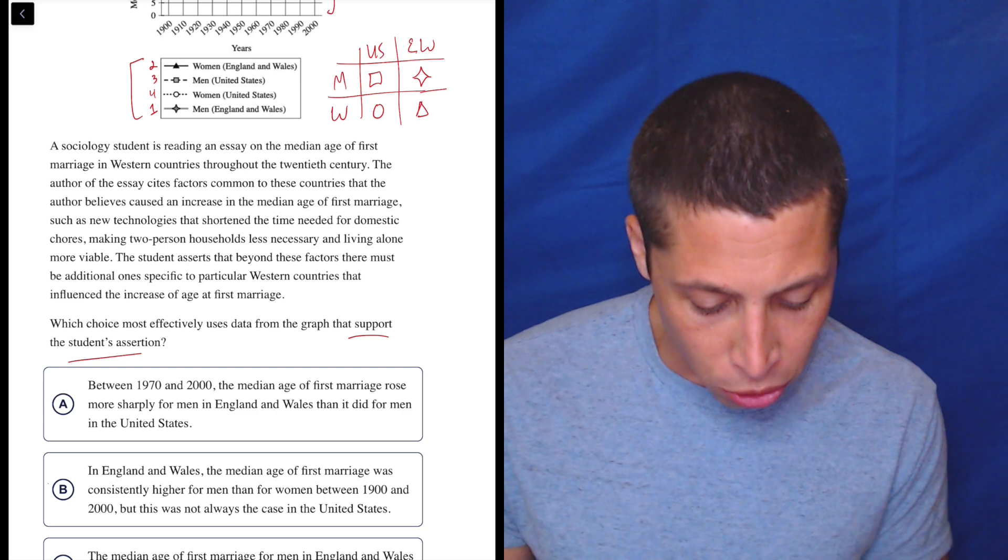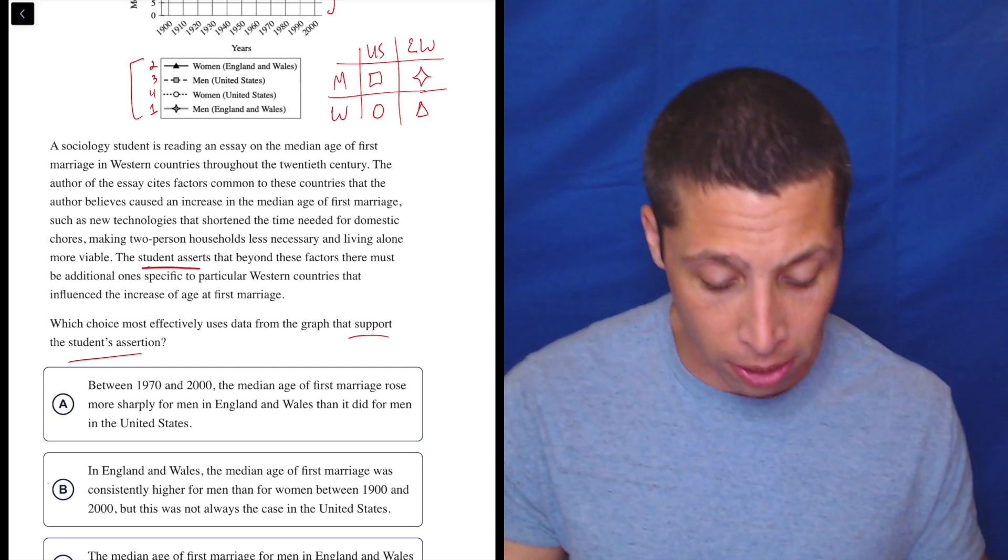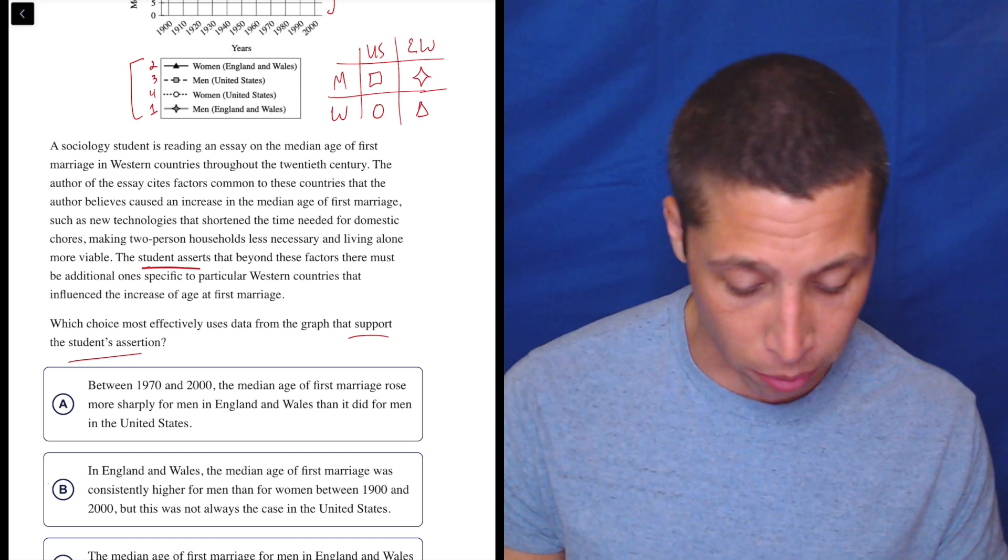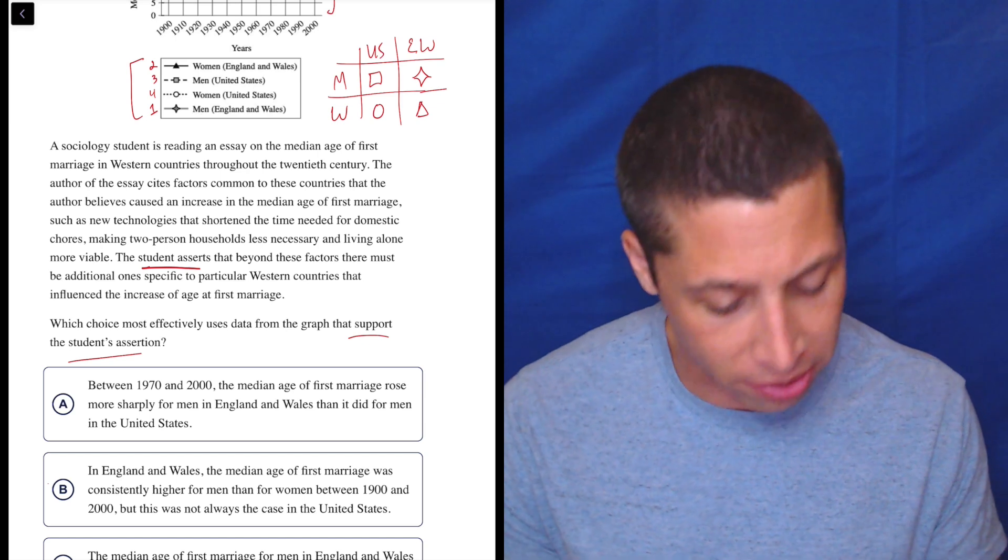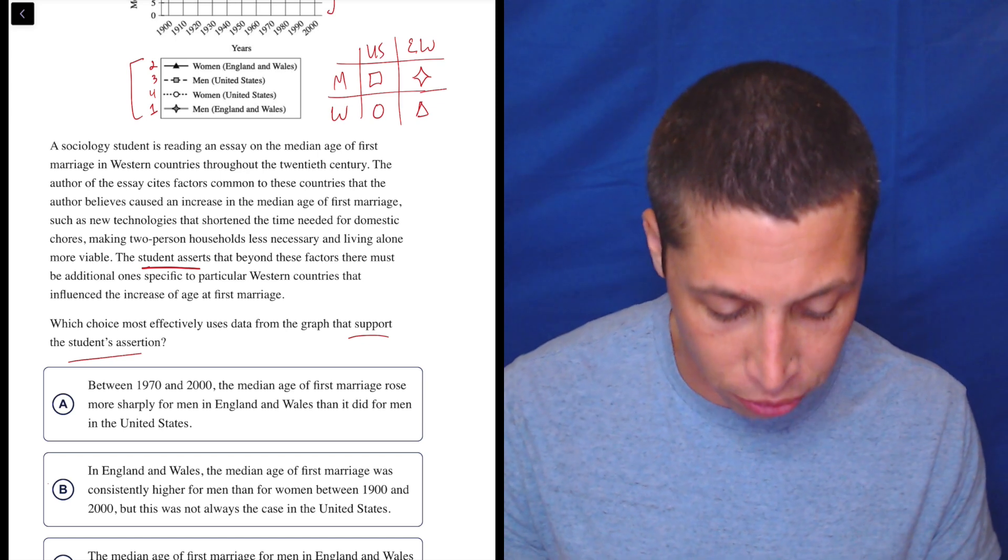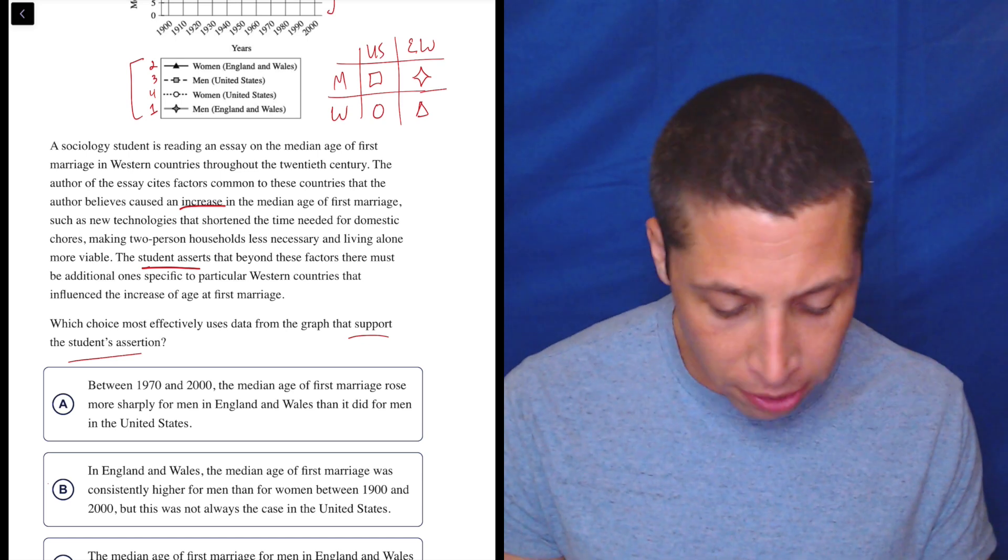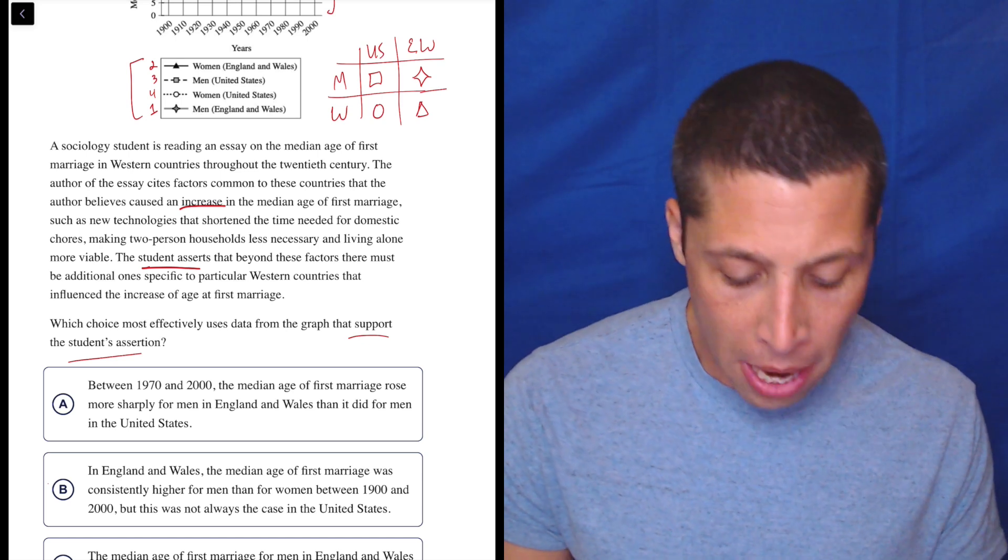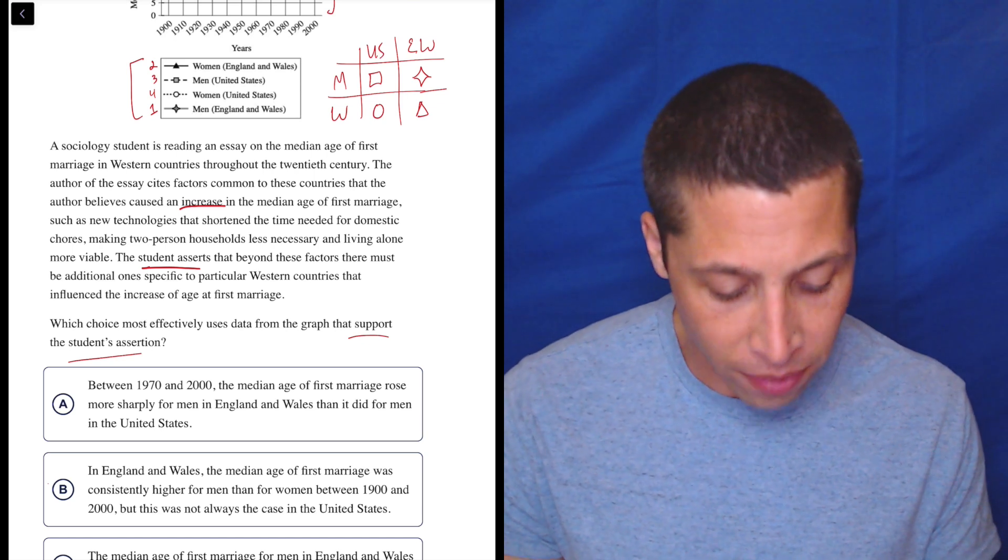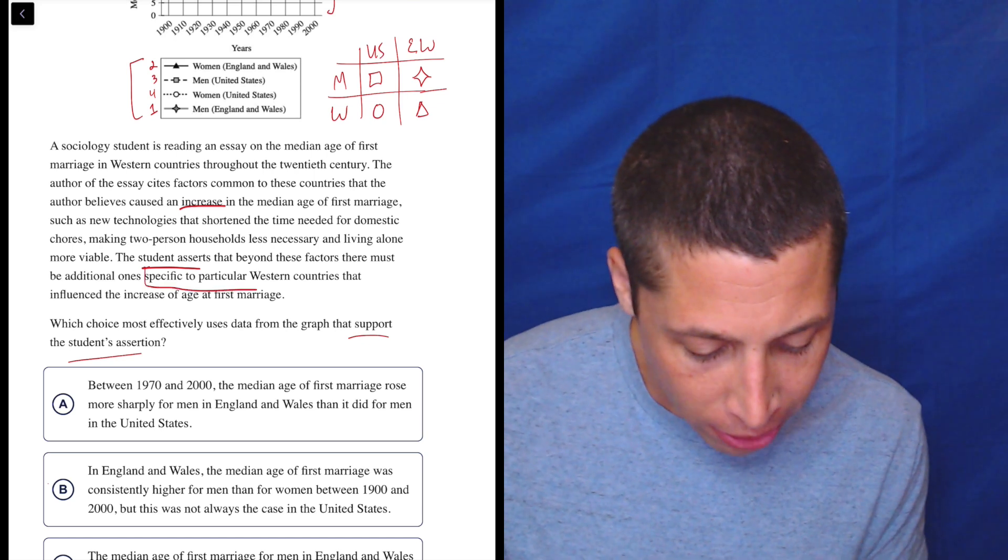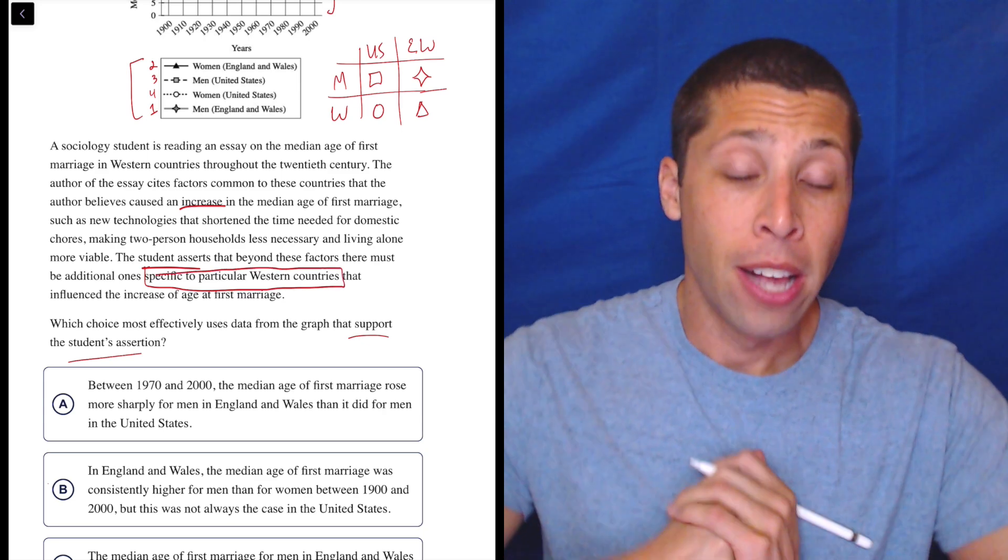They want us to support the student's assertion. Lucky for us, they always kind of really make it clear where the assertion is, so that's right here, but we are going to read everything. Let's make sure we get a sense of what's going on. A sociology student is reading an essay on the median age of first marriage in Western countries throughout the 20th century. The author of the essay cites factors common to these countries that the author believes caused an increase in the median age of first marriage, such as new technologies to shorten the time needed for domestic chores, making two-person households less necessary, and living alone more viable. The student asserts that beyond these factors, there must be additional ones specific to particular Western countries that influence the increase of age at first marriage.